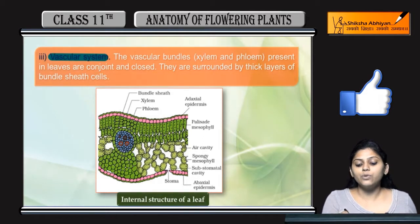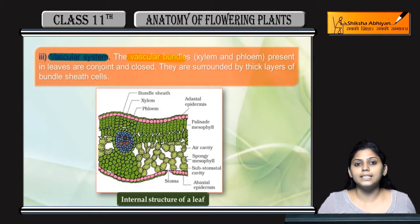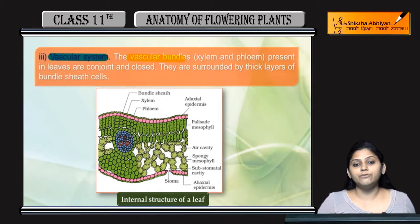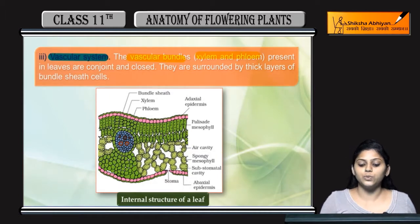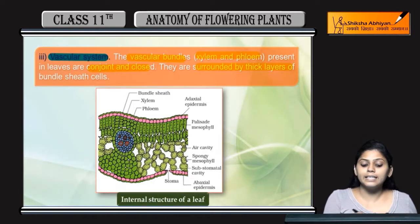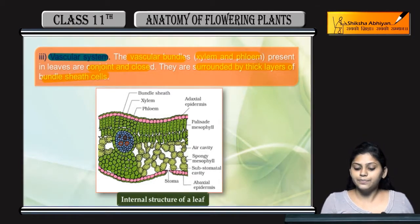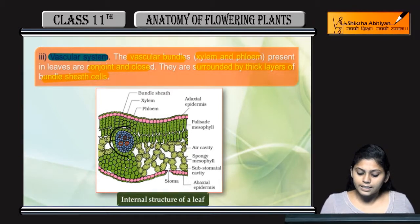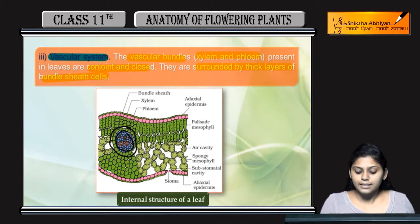Coming to the vascular bundles — they transport water, minerals, and food material. They consist of xylem and phloem, and are conjoint and closed. They are surrounded by a thick layer of bundle sheath cells. In the diagram, you can see the bundle sheath cell layer, and inside that, xylem and phloem are present.